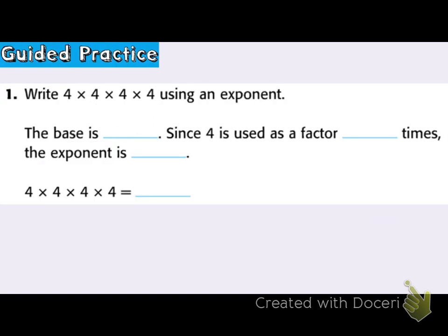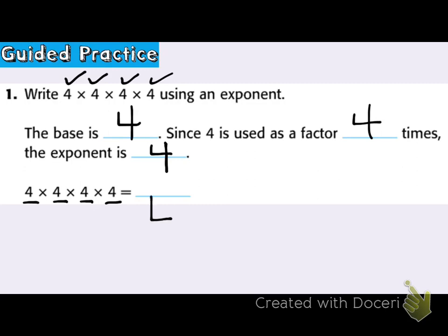Moving into guided practice: write 4 times 4 times 4 times 4 using an exponent. The base is 4 — we're dealing with the digit 4. Since 4 is used as a factor 1, 2, 3, 4 times, the exponent is also 4. So you could write this as 4 times 4 times 4 times 4, but this lesson is all about efficiency — making it quicker. Instead of writing 4 times 4 times 4 times 4, it is faster to write 4 to the 4th power.